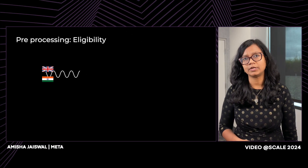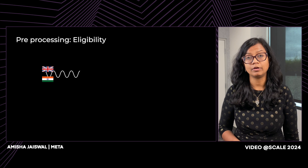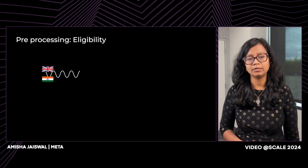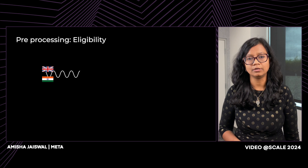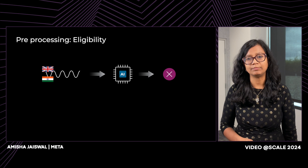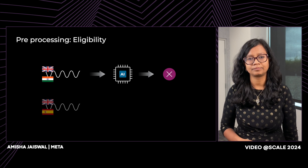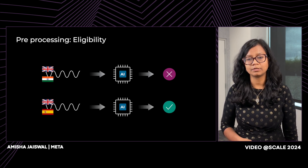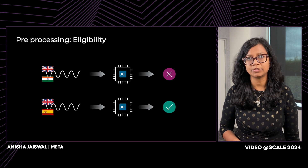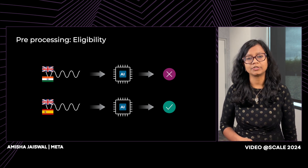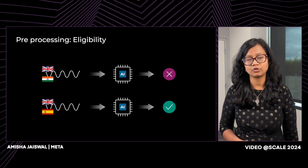We have a bunch of eligibility criteria. One of them being language. For example, English to Hindi translation fails the eligibility check as Hindi is not currently supported by Seamless. However, English to Spanish passes the check as Spanish is supported. We use a language identification model to detect the language of the input audio.